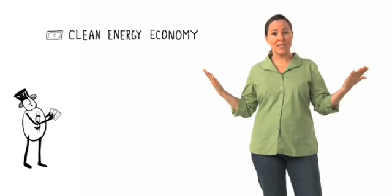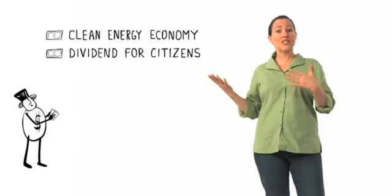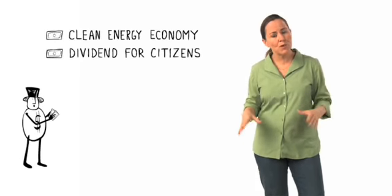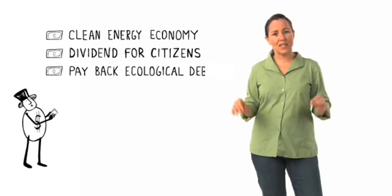Instead of just giving permits away to polluters, we could sell them and use the money to build a clean energy economy, or give citizens a dividend to help pay for higher fuel prices while we transition to that clean energy economy, or share it with those most harmed by climate change. Some people call this paying our ecological debt.